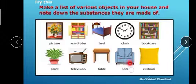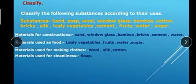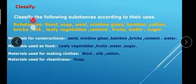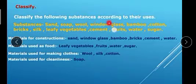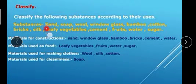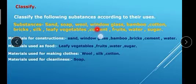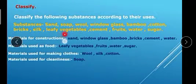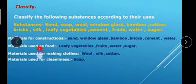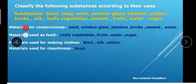Now classify the following substances according to their uses. Here are some substances we have to classify: sand, soap, wood, window glass, bamboo, cotton, bricks, silk, leafy vegetables, cement, fruits, water, and sugar.